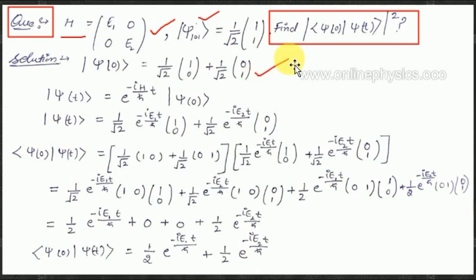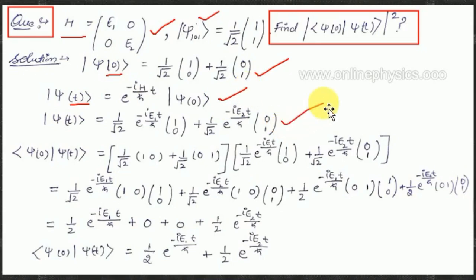We have psi at t = 0 equal to (1/√2)(1, 1), which can be written as (1/√2)(1, 0) + (1/√2)(0, 1). Now psi at t is written as exp(−iHt/ℏ) acting on psi at 0. Substituting, psi at t becomes (1/√2) exp(−ie1t/ℏ)(1, 0) plus (1/√2) exp(−ie2t/ℏ)(0, 1), using the eigenvalues e1 and e2 from the Hamiltonian.